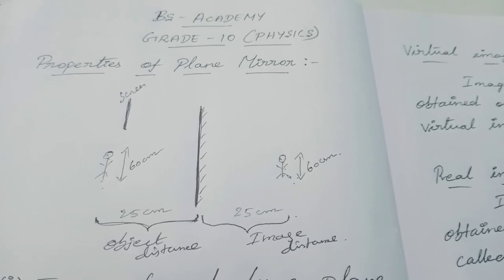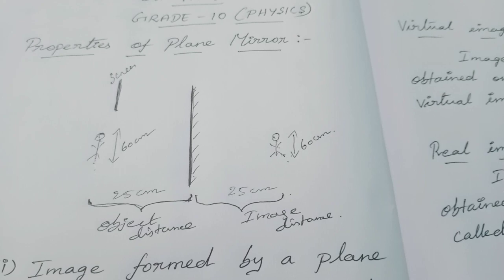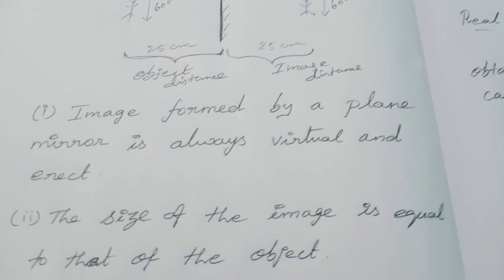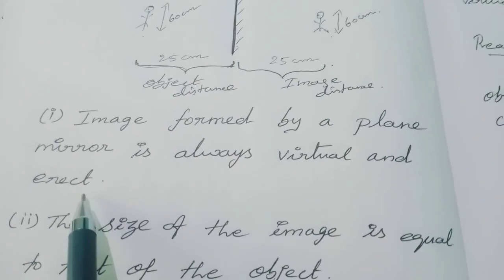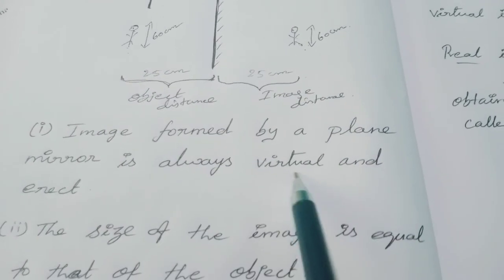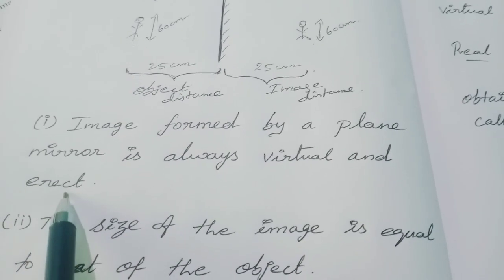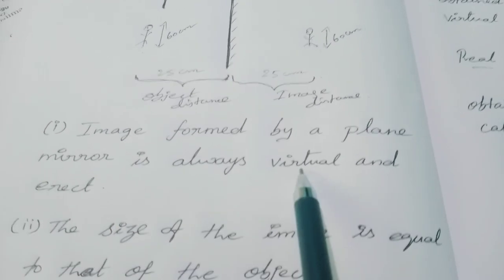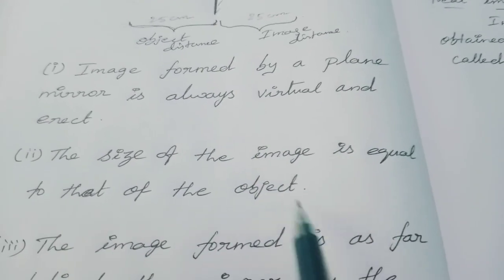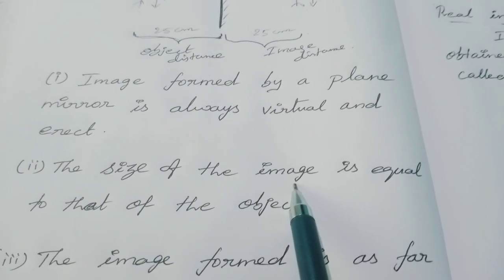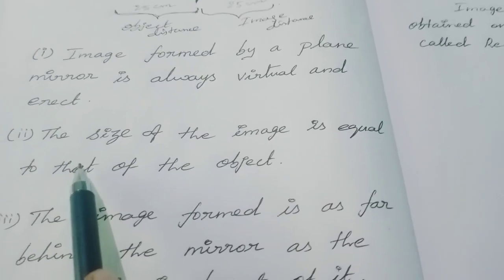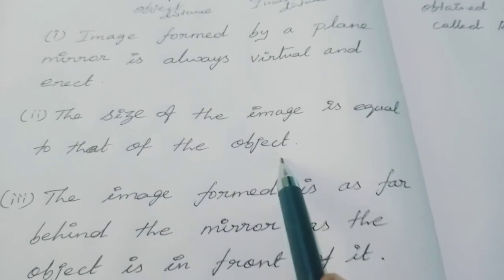Now let us list the properties of the plane mirror. The first point: the image formed by a plane mirror is always virtual and erect. Virtual means it cannot be obtained on a screen; erect means it is not inverted top to bottom. The second point: the size of the image is equal to the size of the object.